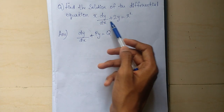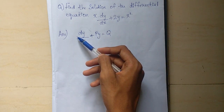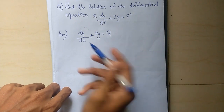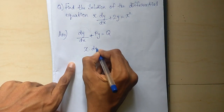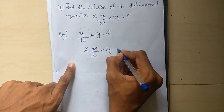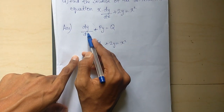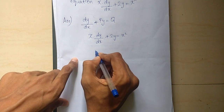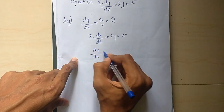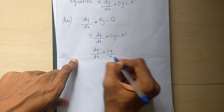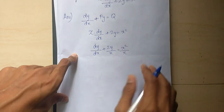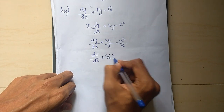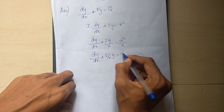The equation is x into dy by dx plus 2y equals x squared. We divide through by x to get dy by dx plus 2y by x equals x. Now let's write it in the standard form dy by dx plus 2y equals x squared.